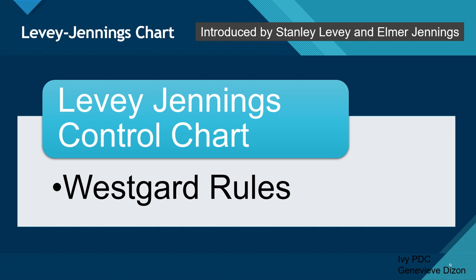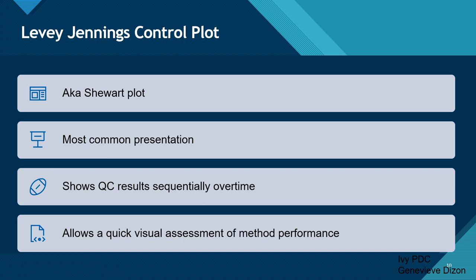The quality control chart we will learn next is the Levy-Jennings control chart, introduced by Stanley Levy and Elmer Jennings. This is the most important control chart in laboratory quality control because it is able to detect all kinds of analytical errors. It is supported by the Westgard rules and is also known as the Schuert plot — the most common QC presentation, showing results sequentially over time and allowing quick visual assessment of method performance.